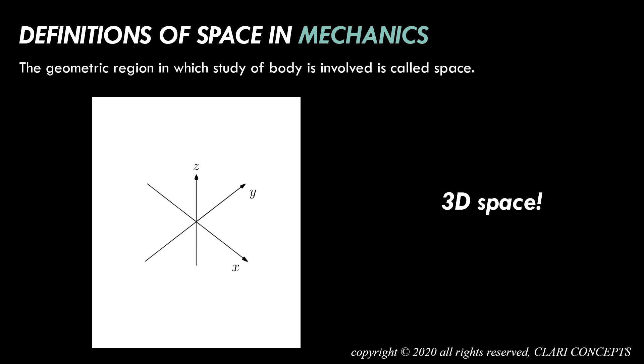I'm talking about the 3D space in which an object is placed. As you can see in the small video clip I'm showing there, it indicates the Cartesian coordinate system—that is, x, y, and z axes. If I place a small particle in any of these coordinates, I'll be able to specify and tell you where exactly the point is located in the three-dimensional space. The geometrical region in which the study of a body is involved is called space. It need not be extremely large—it can be as small as centimeters, millimeters, or even nanometers.